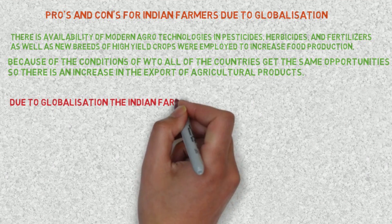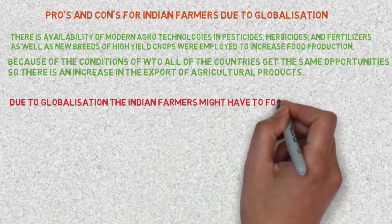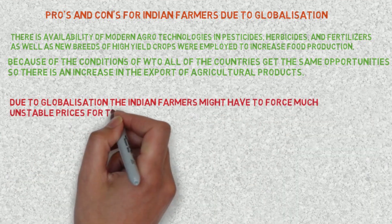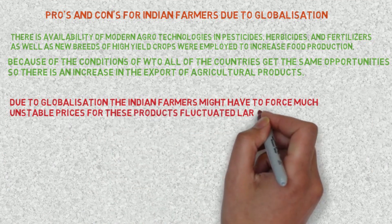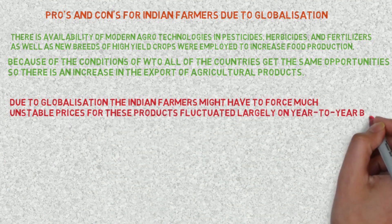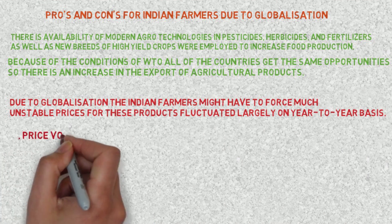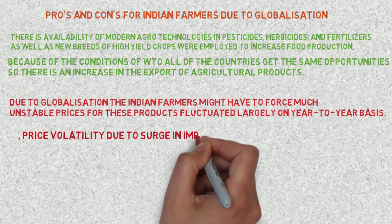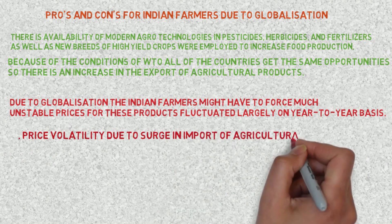Cons: Due to globalization, Indian farmers might have to face much unstable prices, as these product prices fluctuated largely on a year-to-year basis. Price volatility is caused by the surging import of agricultural crops.